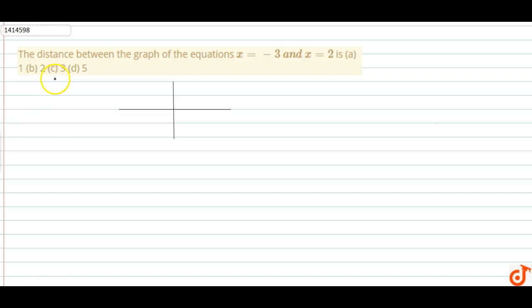Hi guys, today we will be solving this question: the distance between the graph of the equations x = -3 and x = 2. So basically our x is here at minus 3,0 which is on the negative x-axis, and on the positive axis is 2,0.